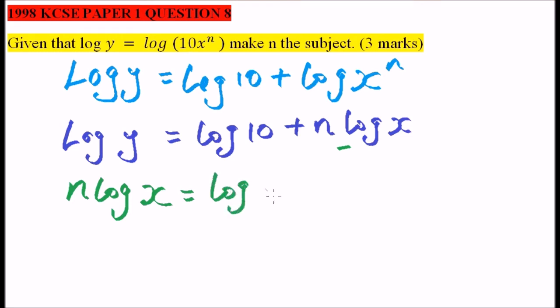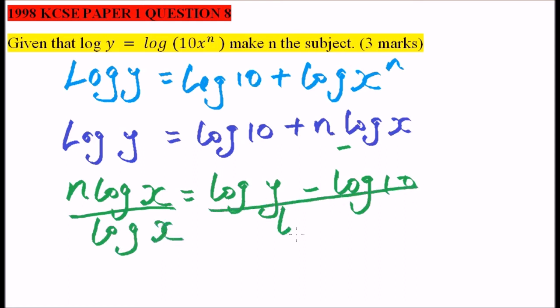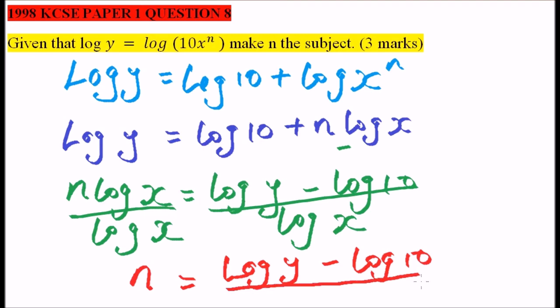Divide both sides by log x, divide this side by log x, and then you'll be left with n equals log y minus log 10, all this divided by the logarithm of x. And that is how you work it out, you earn yourself three marks.